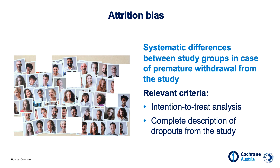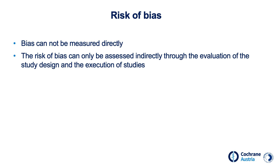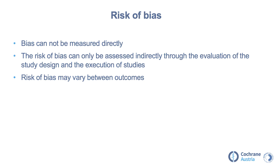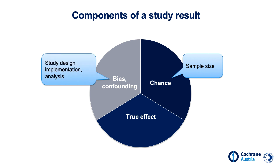When we critically evaluate studies, we try to estimate the risk of bias. Bias cannot be measured directly; the risk of bias can only be assessed indirectly through evaluation of the study design and execution. The risk of bias between outcomes may vary — for example, while subjective outcomes such as pain can be strongly influenced by lack of blinding, this has no effect on hard outcomes such as mortality. The aim of studies is to map the true effect of an intervention as well as possible, meaning the distorting influence of confounding, chance, and bias should be contained as much as possible. A large sample minimizes random error, while good study design, execution, and analysis minimize confounding and bias.